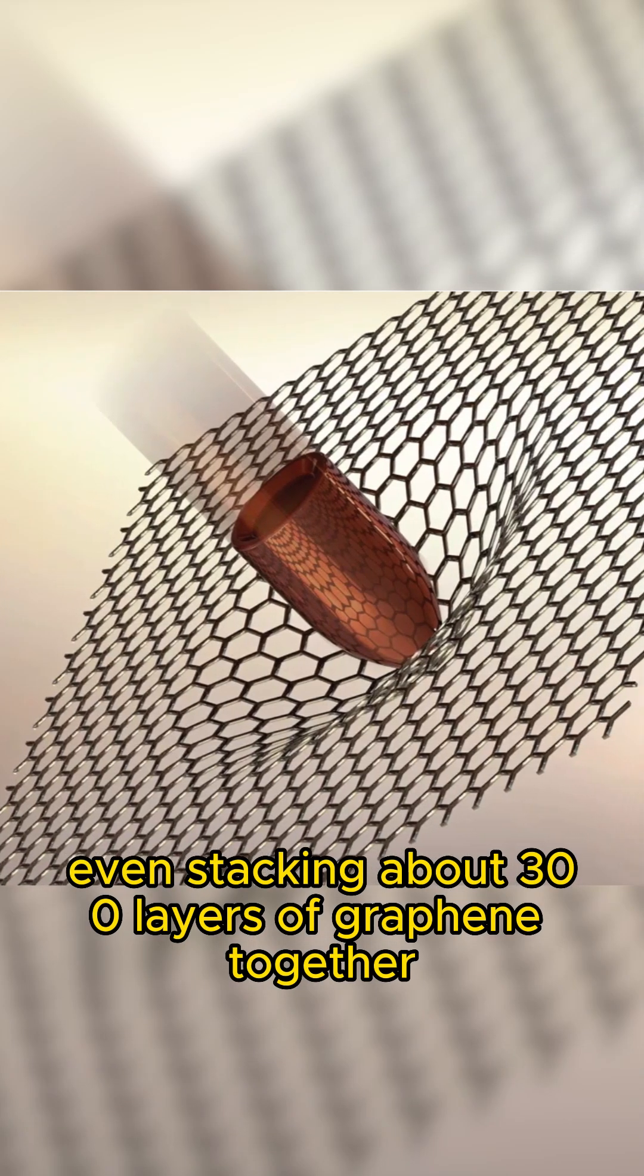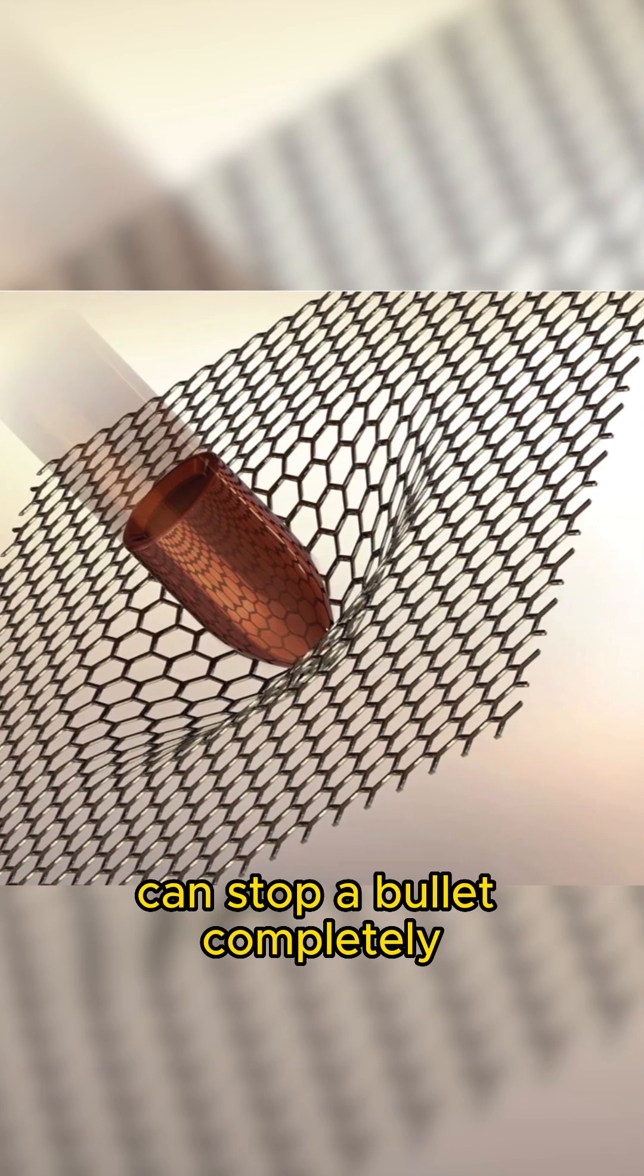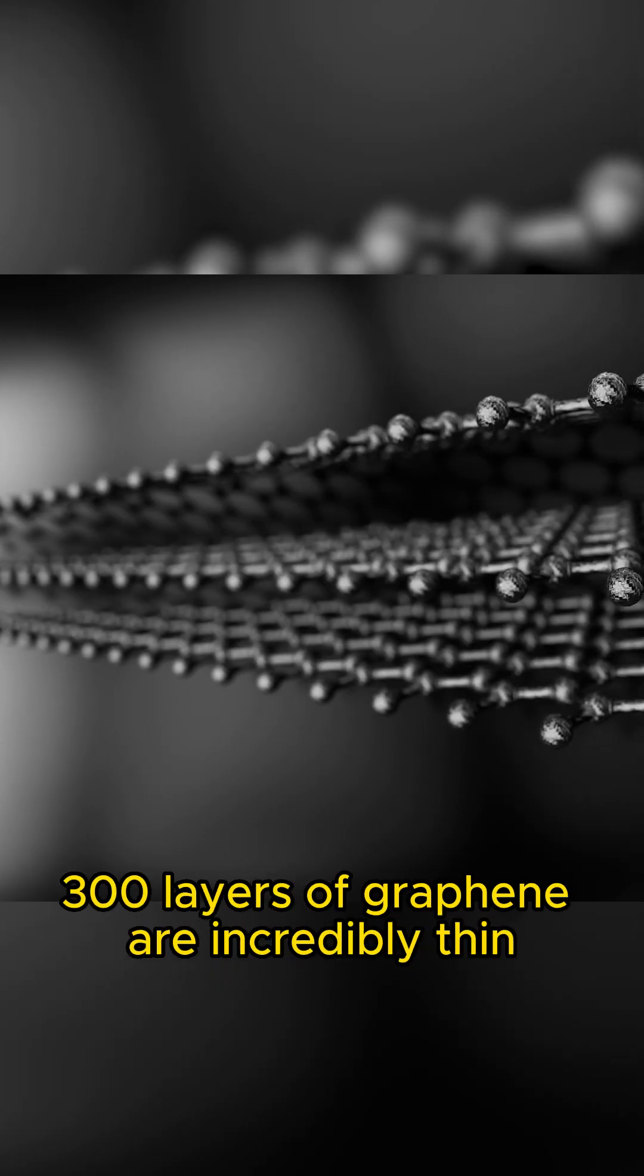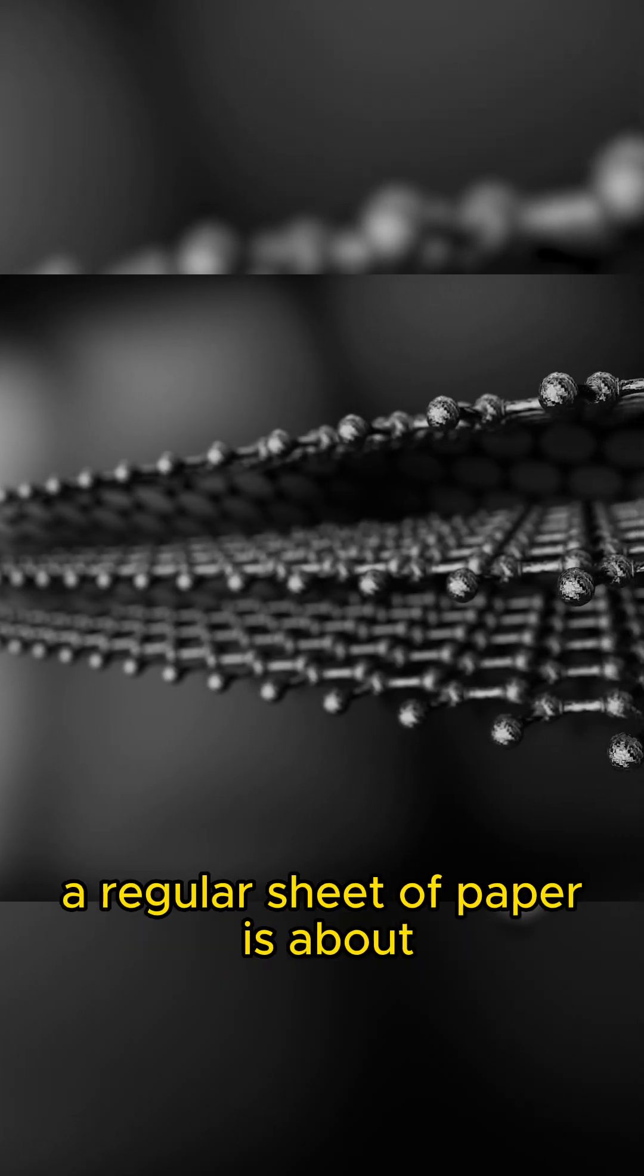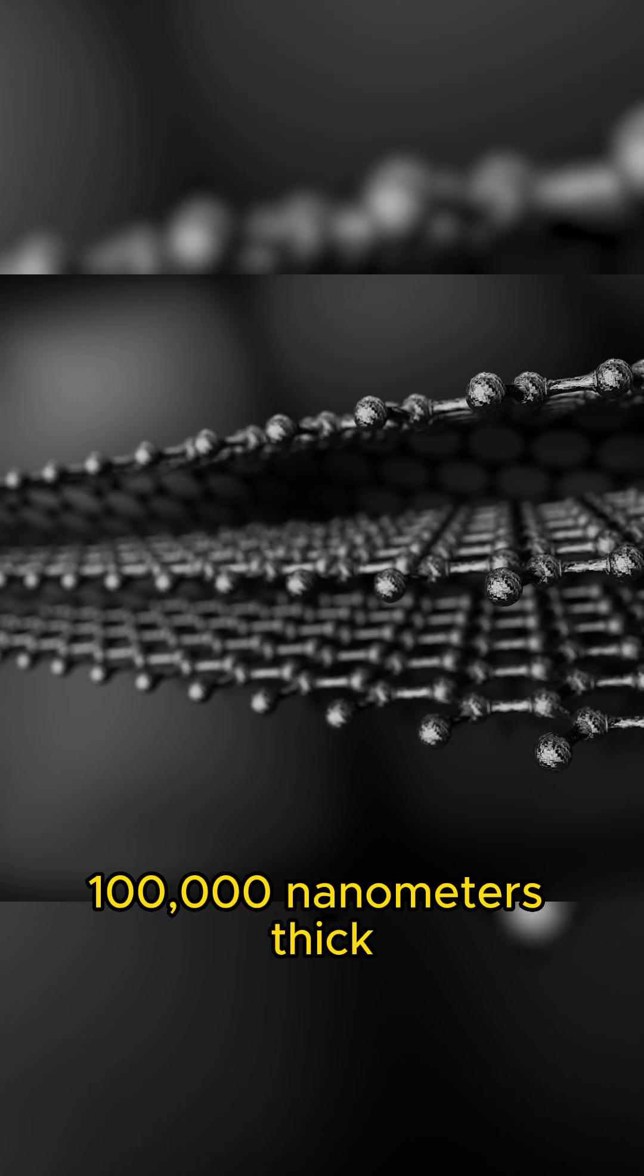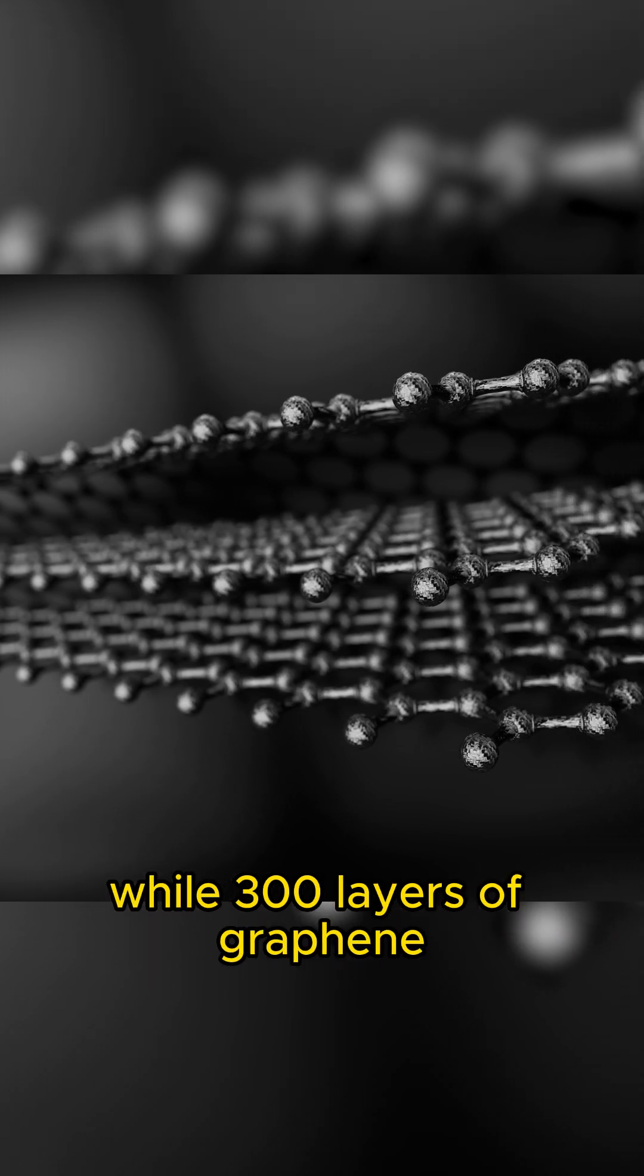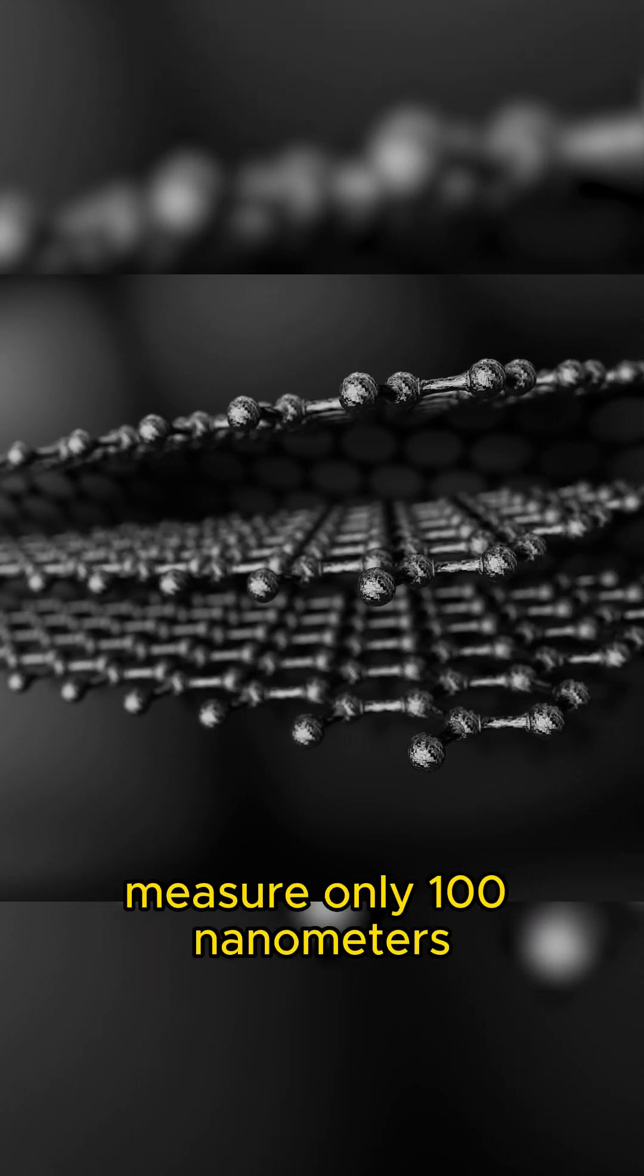Even stacking about 300 layers of graphene together can stop a bullet completely. 300 layers of graphene are incredibly thin. A regular sheet of paper is about 100,000 nanometers thick, while 300 layers of graphene measure only 100 nanometers.